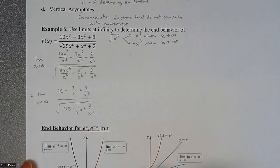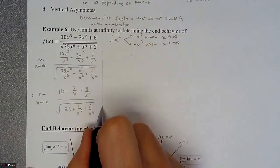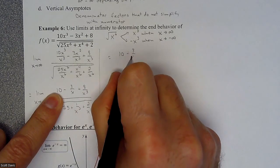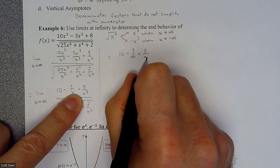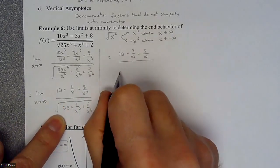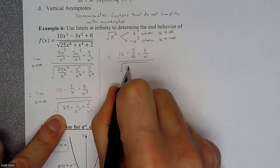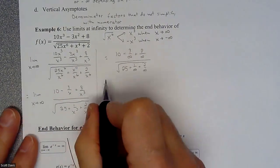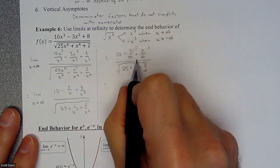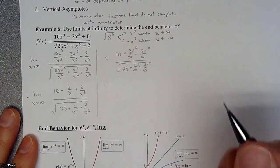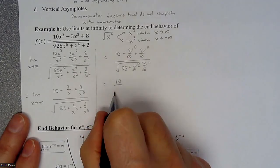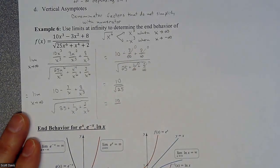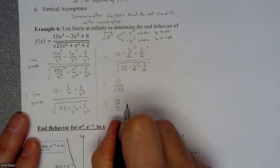Now we're at a point where we can plug in infinity. So if we plug in infinity, we're looking at 10 minus 3 over infinity plus 8 over infinity, divided by the square root of 25 plus 1 over infinity plus 2 over infinity. Those terms are approaching zero, so we're really left with 10 over the square root of 25, which equals 10 over 5, which gives us 2.